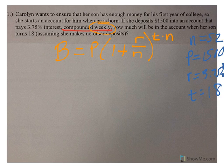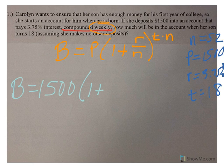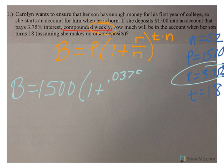So, when I go to plug these numbers in, I can say my balance, 1500 times 1 plus—now, the rate, we can't play with that as a percent, so I put in .0375, divided by 52,